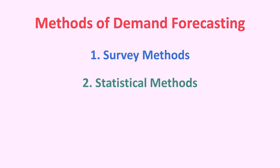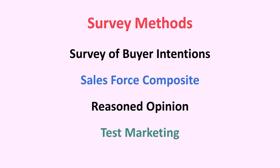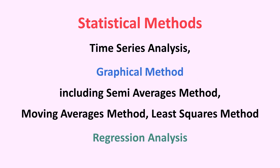There are two forecasting methods which are generally used: survey methods and statistical methods. Under survey methods, we discuss survey of buyer intentions, sales force composite, expert opinion, and test marketing. While in statistical methods, we discuss time series analysis and the graphical method, including the semi-averages method, moving averages method, least-squares method, and regression analysis.